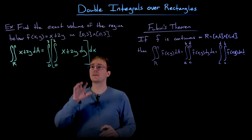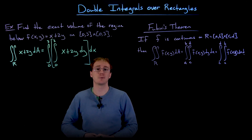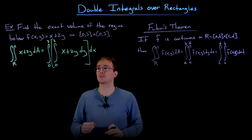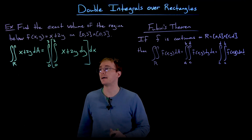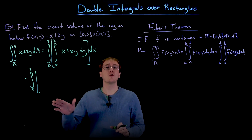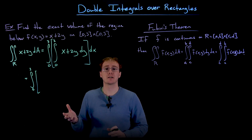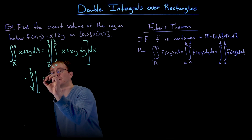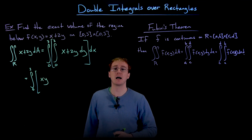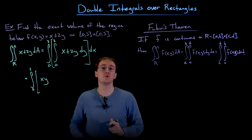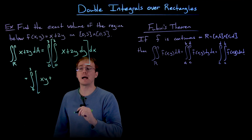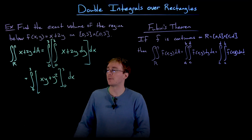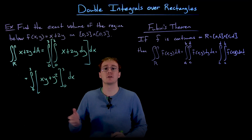We find the antiderivative with respect to y of x + 2y — that is, some function which when differentiated with respect to y returns x + 2y. When antidifferentiating with respect to y we treat x as a constant. The antiderivative of the constant x with respect to y is xy. Using the power rule, the antiderivative of 2y is y squared. So our antiderivative is xy + y².